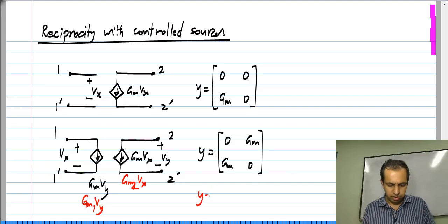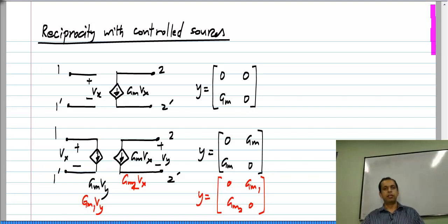So then, the Y parameter set would be 0, GM1, GM2, and 0, and in that case we do not have reciprocity. So if the two controlled sources have equal coefficients, this particular network is reciprocal; otherwise, it is not. So you cannot make a general statement in case of circuits having controlled sources.